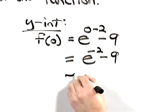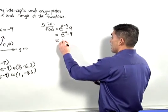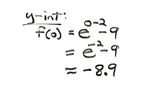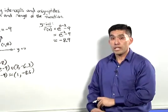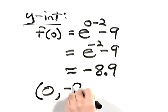We can approximate this by plugging this into the calculator. Approximating at the tenths position, we end up with negative 8.9. So the y-intercept is 0 comma negative 8.9.